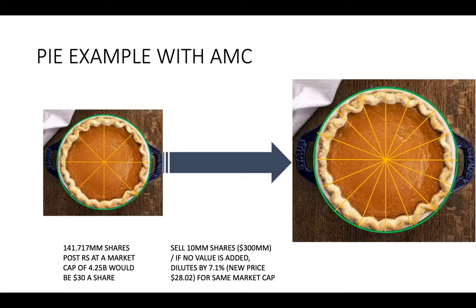There tend to be fees and commissions for selling shares, so let's say it's something a little less than $300 million. If no value is added — he just got a bunch of cash, didn't add value to the company, didn't threaten shorts, nobody closes — then the 10 million shares dilutes by 7%. You've cut the pie into smaller pieces. The new price would be about $28. If the market cap doesn't change, then sure — Gasparino is going to get on the air and say, 'Look at you stupid apes, look at this dilution. Sky is falling, get out.' We all know how that goes.